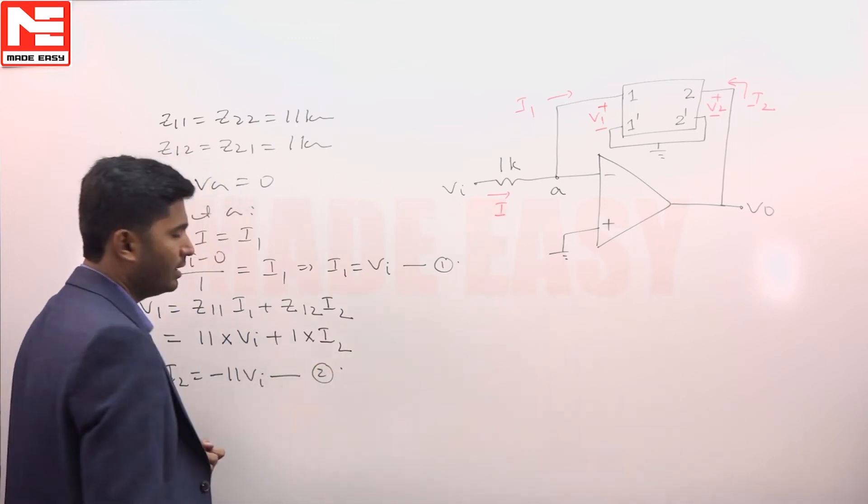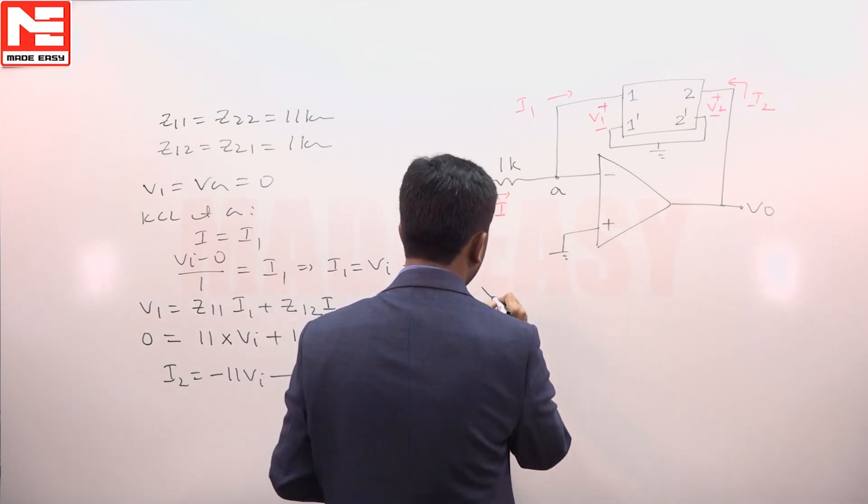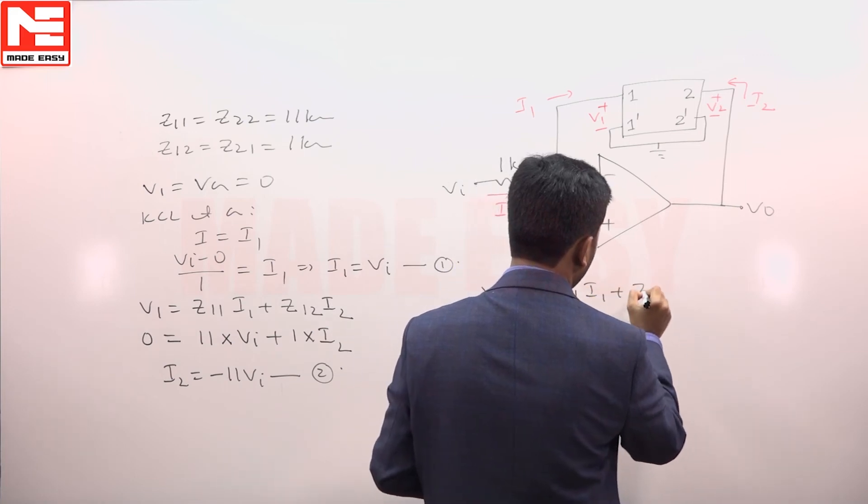And then the other z parameter equation is V 2 equal to z 2 1 into i1 plus z 2 2 into i2.